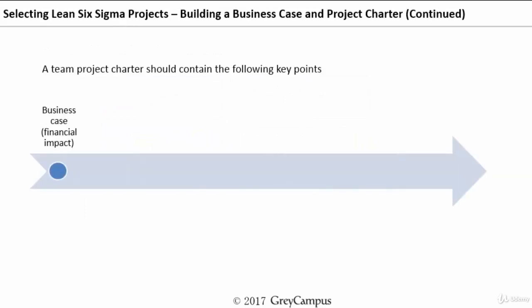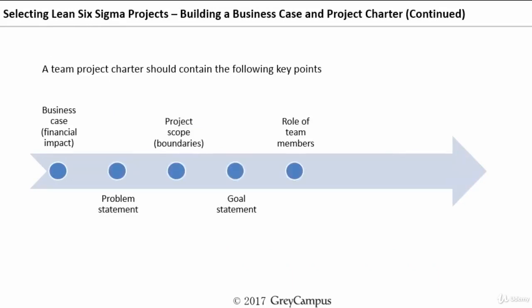The project charter has many key components. The first is a business case — a document showing what benefits the project will deliver. The charter also contains the problem statement, the goal statement, the project scope and boundaries, the roles of team members, the milestones for deliverables, and the resources required. Now we will look at each of these requirements one by one.